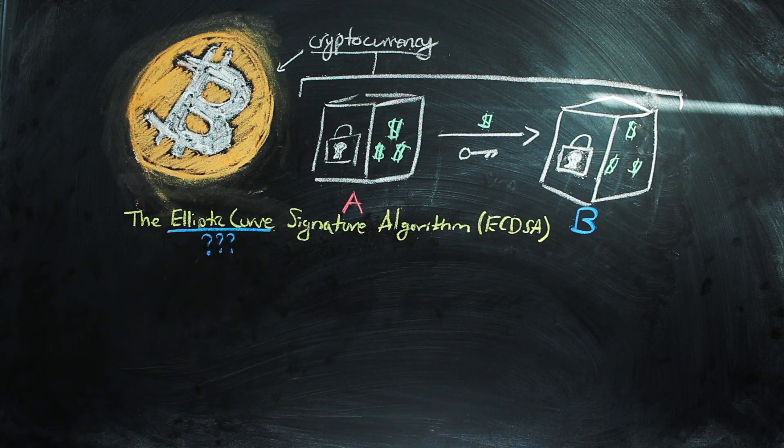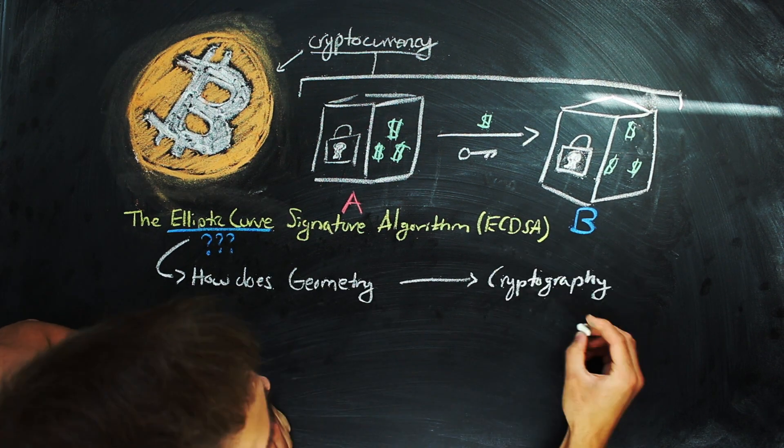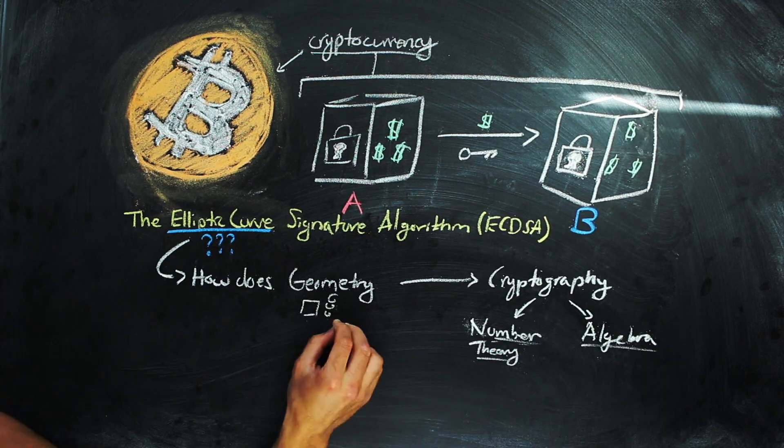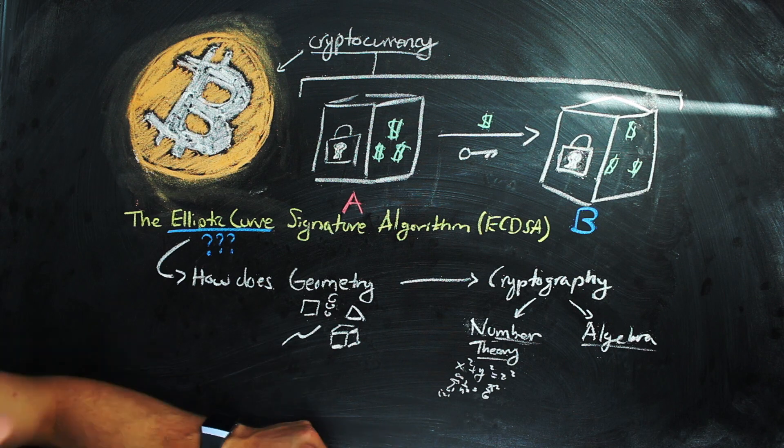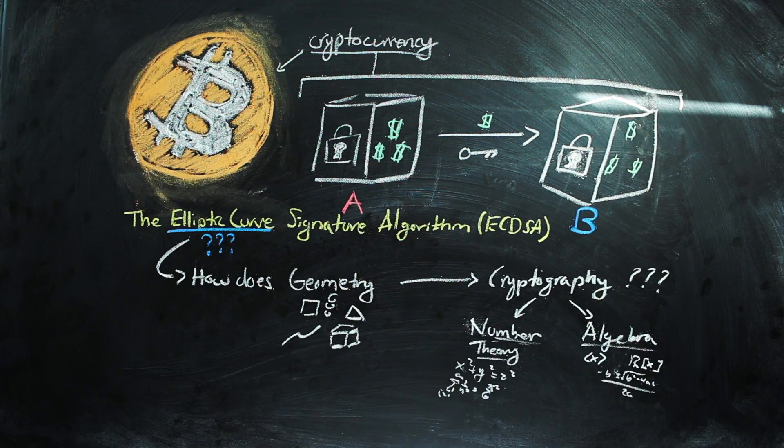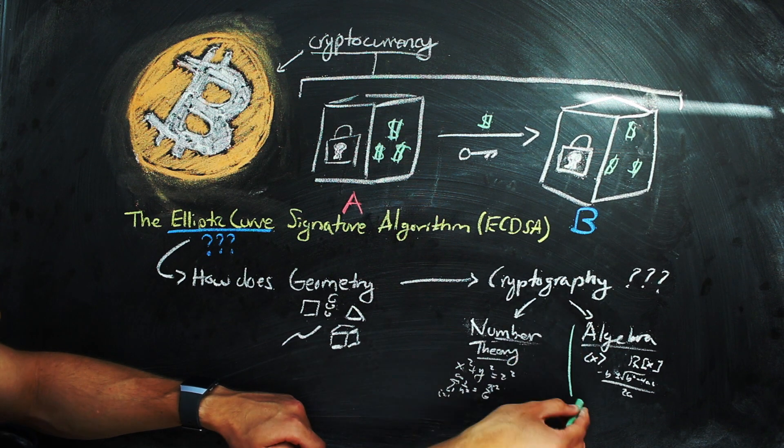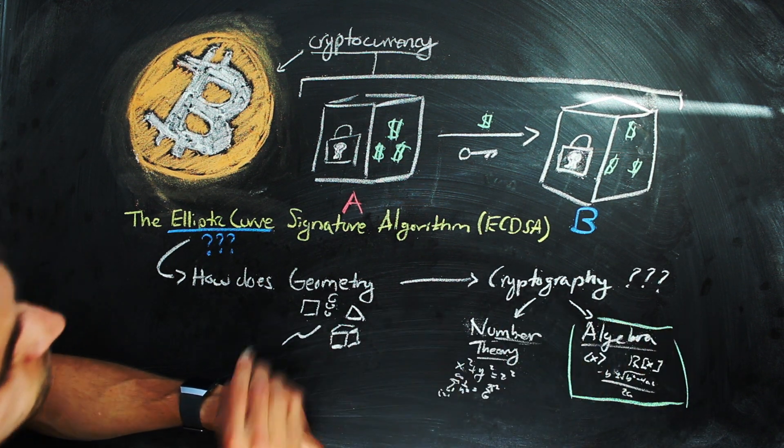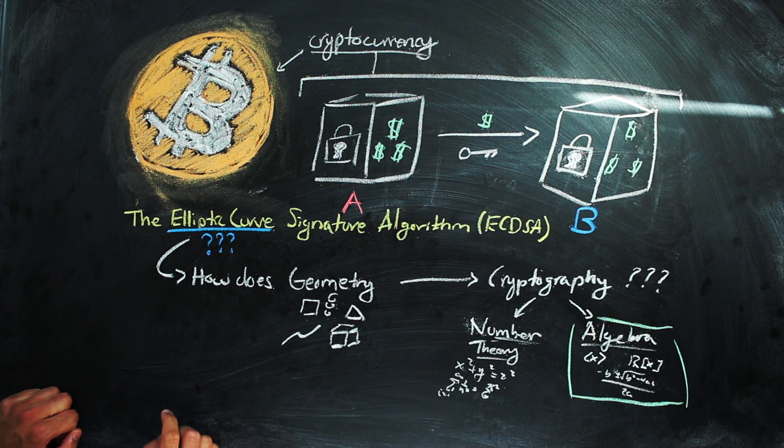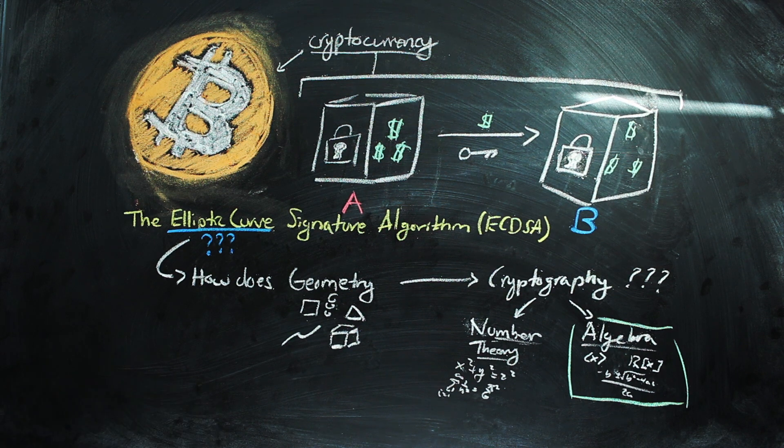But what is an elliptic curve and how can we use a geometric object to do cryptography, which usually involves loads of number theory and algebra. We're going to focus on the arithmetic of an elliptic curve, so more on the algebra side of things, because that's one of the rudiments of any cryptosystem is how you're transforming what you're encoding.